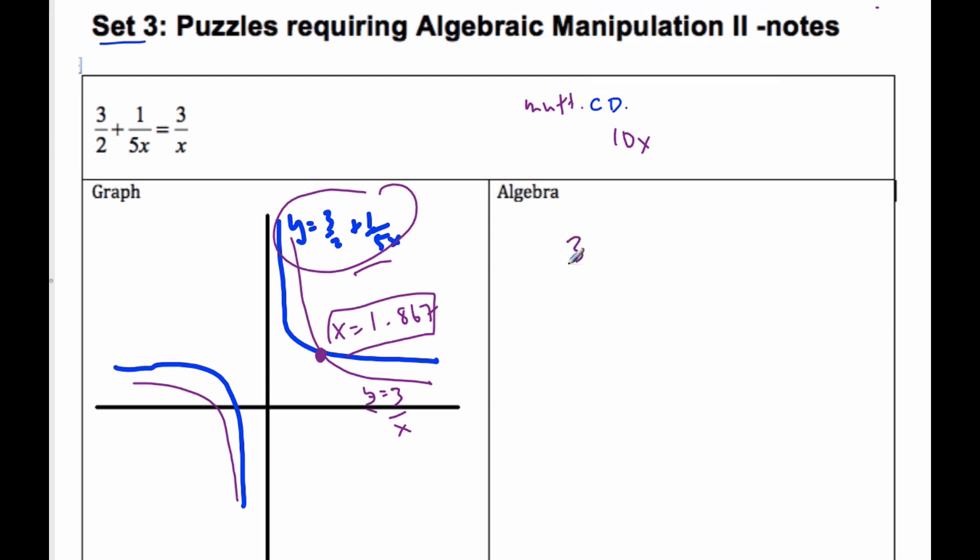If I take my equation, 3/2 plus 1 over 5x is equal to 3 over x, I'm going to multiply the whole equation by 10x. And so that means, because the fundamental rule of value, if I do the one side of the equation, I do it to the other side of the equation. Which means every term will be multiplied by 10x.